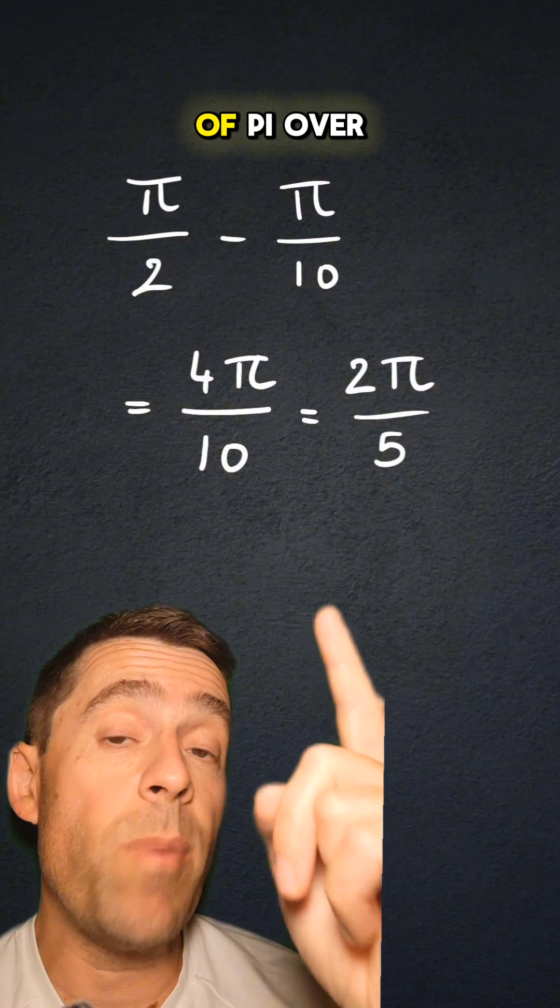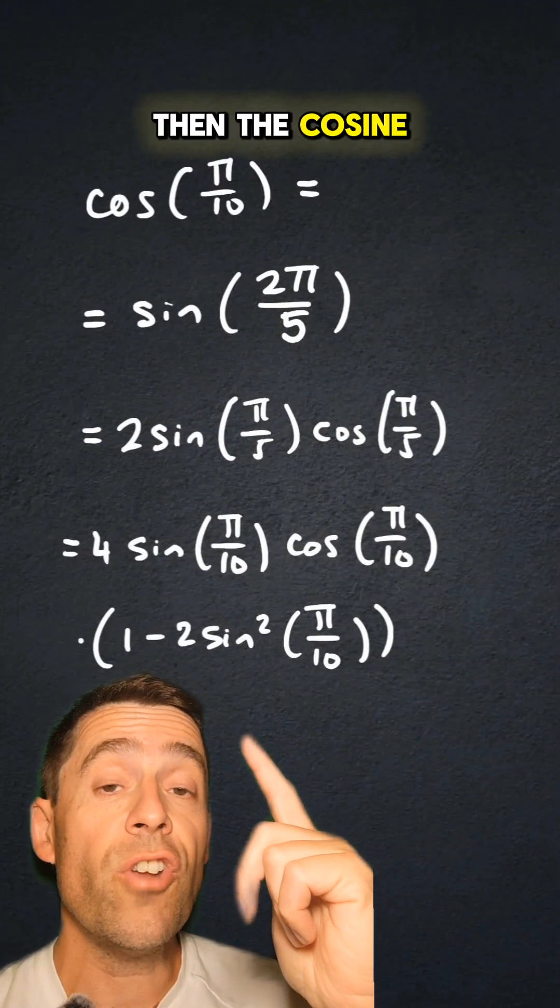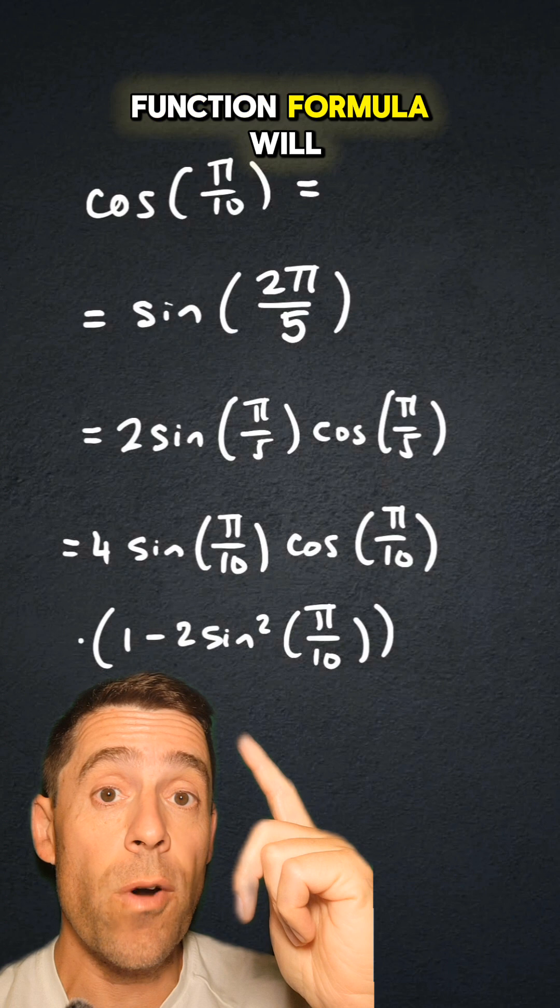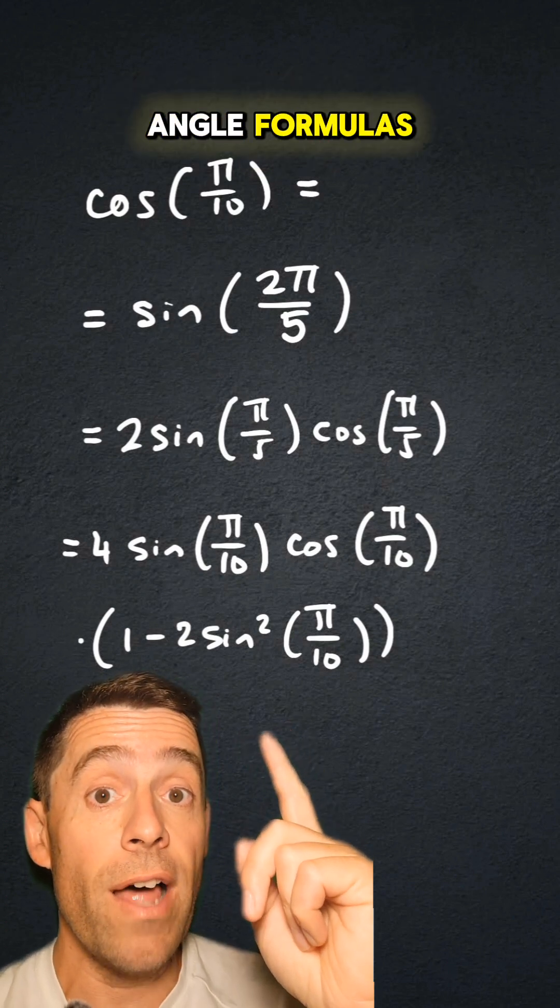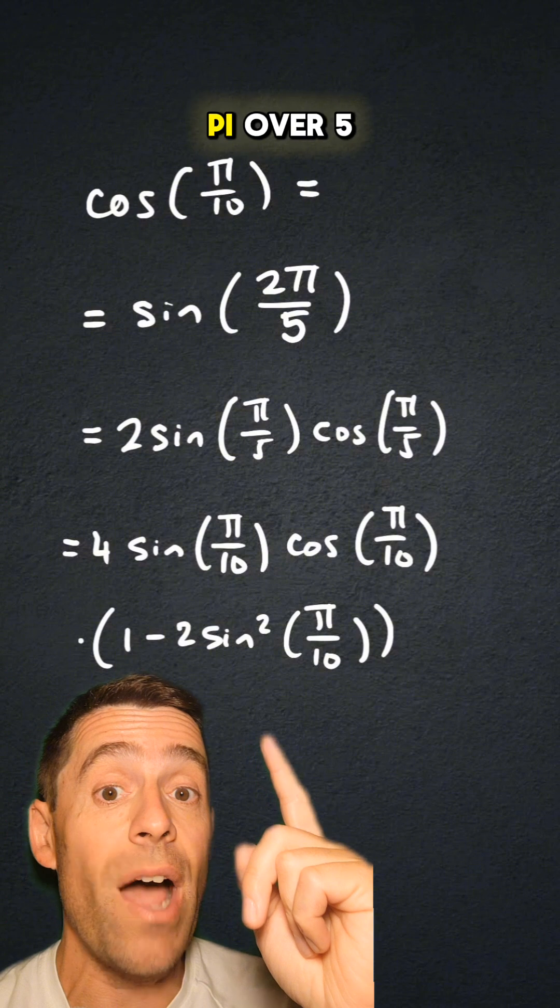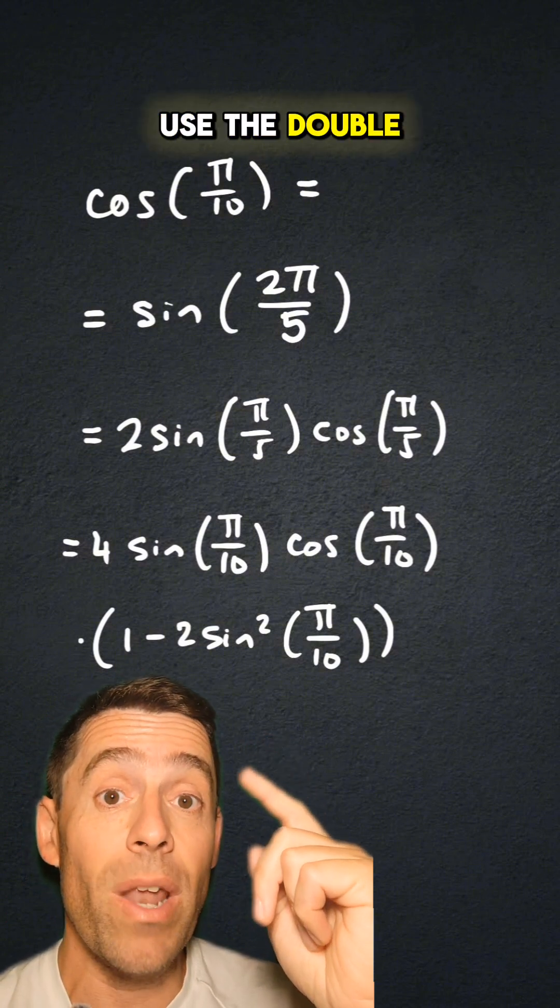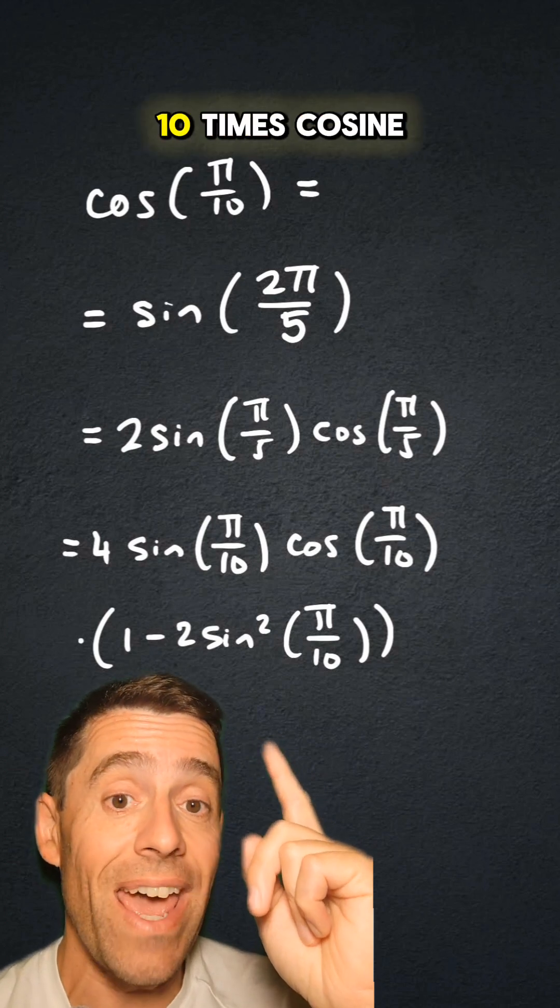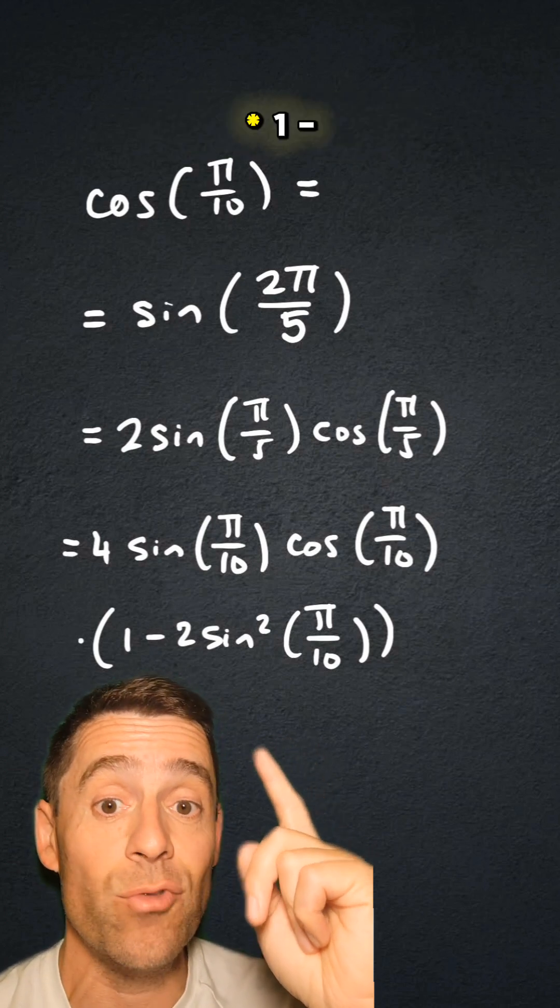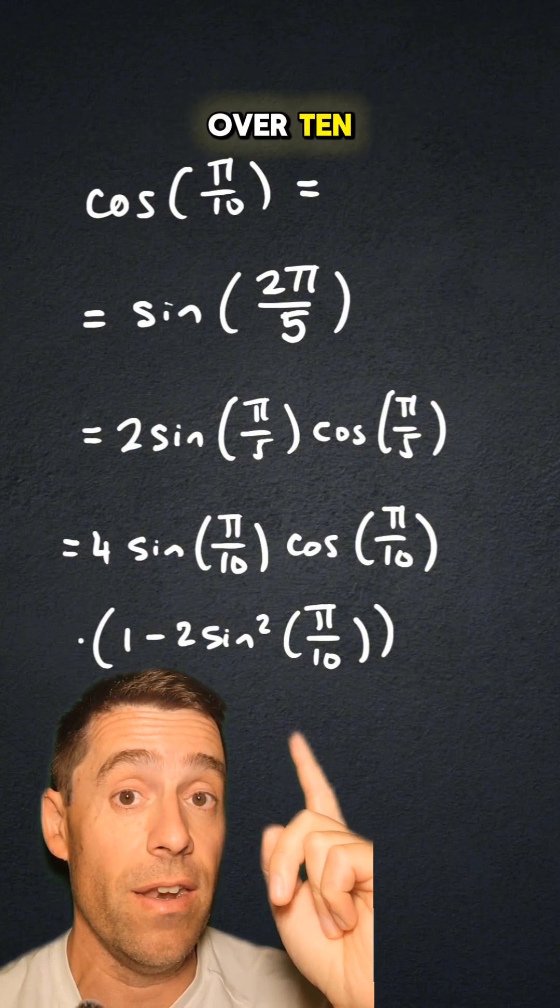The complementary angle of π/10 is 2π/5. Then the cosine of π/10 by the co-function formula will be the sine of 2π/5. By the double angle formulas, it will be 2 sine of π/5 times cosine of π/5. And if we use the double angle formulas again, what I get is 4 sine of π/10 times cosine of π/10 times 1 minus 2 times sine squared of π/10.